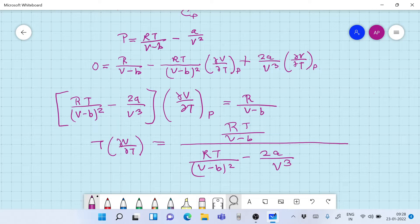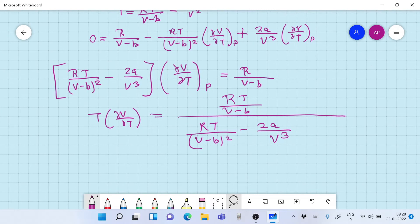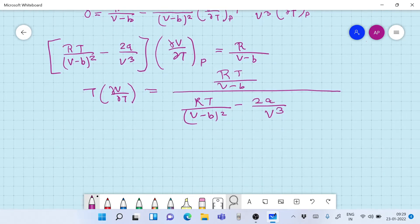Now, we need to calculate this. If you have to calculate the RHS, what you need is only the volume and the temperature. Now A and B values are given to you. So what we can do here is take the Van der Waals equation of state and find the volume.